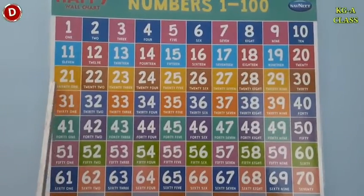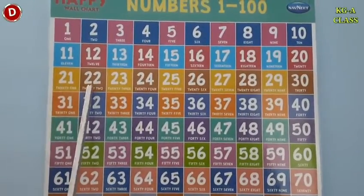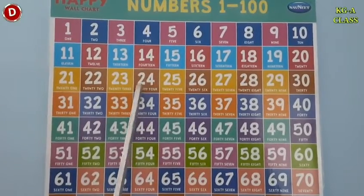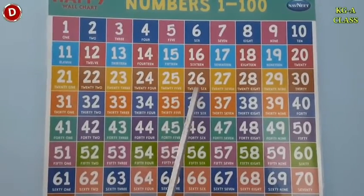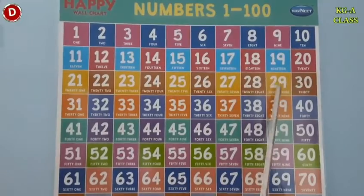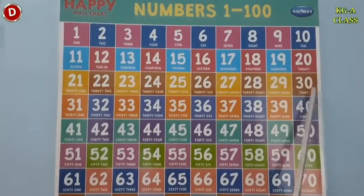After 20 comes 21, 22, 23, 24, 25, 26, 27, 28, 29, 30. 3, 0, 30.